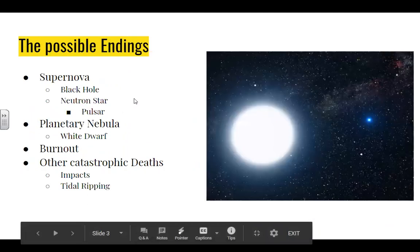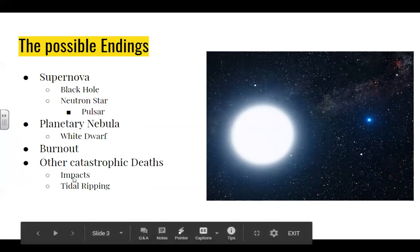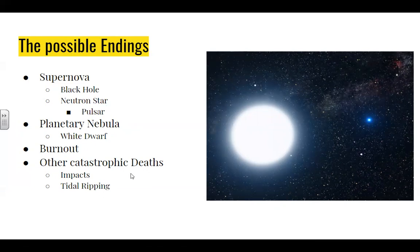When we talk about how stars can end their life, they can end up being a supernova, which can lead to pulsars, neutron stars, and black holes. They can end in a planetary nebula, which will lead to a white dwarf. We can just have a burnout situation where it fizzles out. Or we can have other catastrophic deaths like impacts or tidal ripping. We're going to talk more specifically about supernova and planetary nebula, and what that means for us as a species.